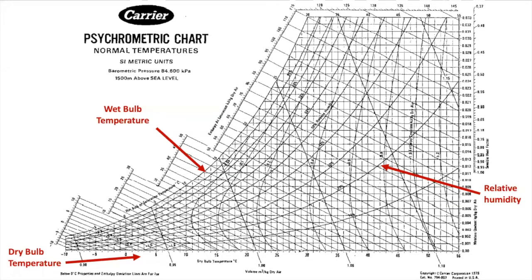A psychrometric chart can provide a lot of information, but let's just focus on three variables. We have dry bulb temperature on the x-axis, relative humidity shown as percentages, and wet bulb in here. So when trying to calculate wet bulb temperature, we will have to make some intersections using the chart. So let's practice with an example.